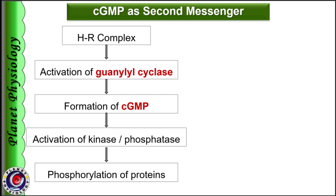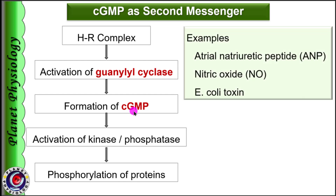Now coming to cyclic GMP as second messenger. The process is exactly the same as that of cyclic AMP. Only instead of adenyl cyclase, the enzyme here is guanyl cyclase, which causes formation of cyclic GMP leading to activation of protein kinase or phosphatase. Hormones like atrial natriuretic peptide and nitric oxide act through cyclic GMP second messenger. The toxins released by bacteria E. coli also act via the cyclic GMP second messenger system.